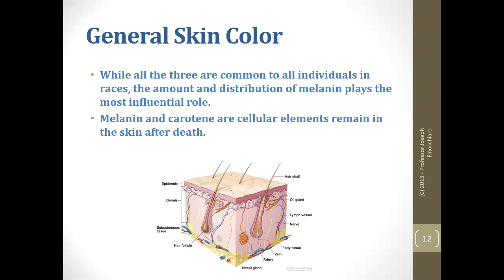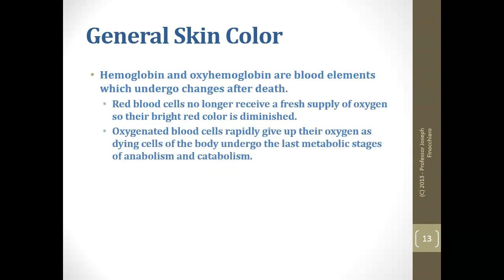Carotene and melanin are cellular elements — they're not in the blood. That means whatever color your skin is in life is what it will be in death. The blood elements will break down and change color after death. Red blood cells no longer receive a fresh supply of oxygen, so the bright red color diminishes, and we're looking at the composition of blood cells breaking down.